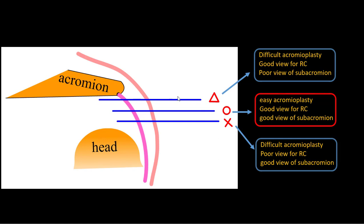The first one, closest to the acromion, is not good because of difficult acromioplasty. It provides a good view for the rotator cuff because you can look down on it, but poor view of the subacromion because it's too close to the acromion.